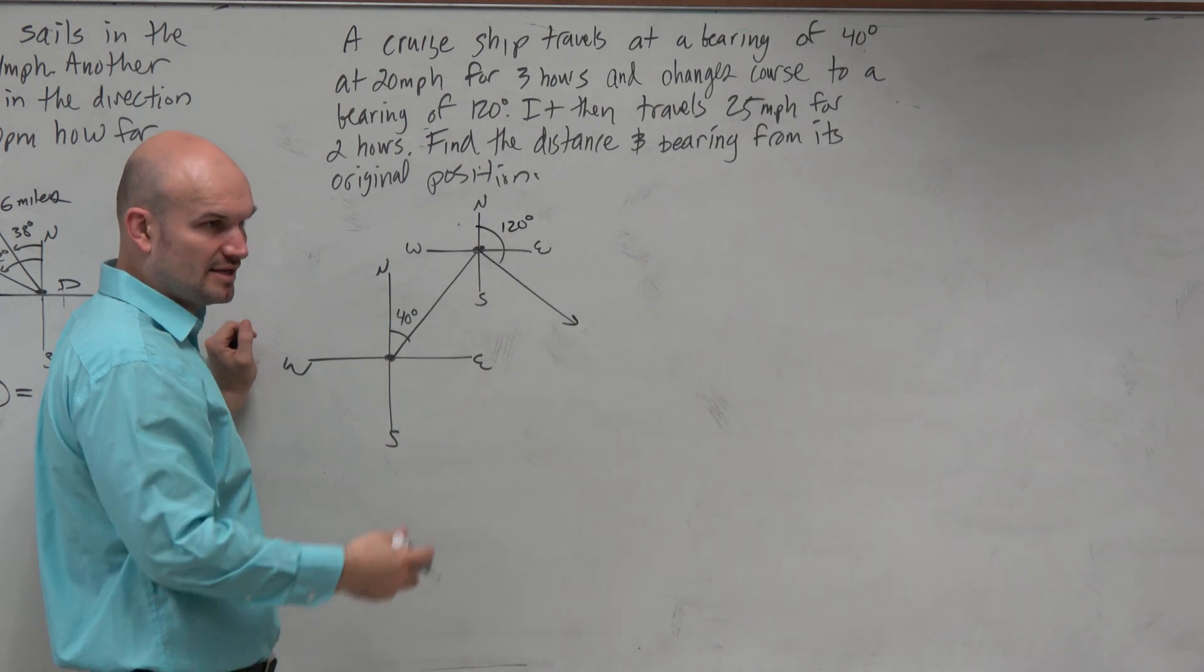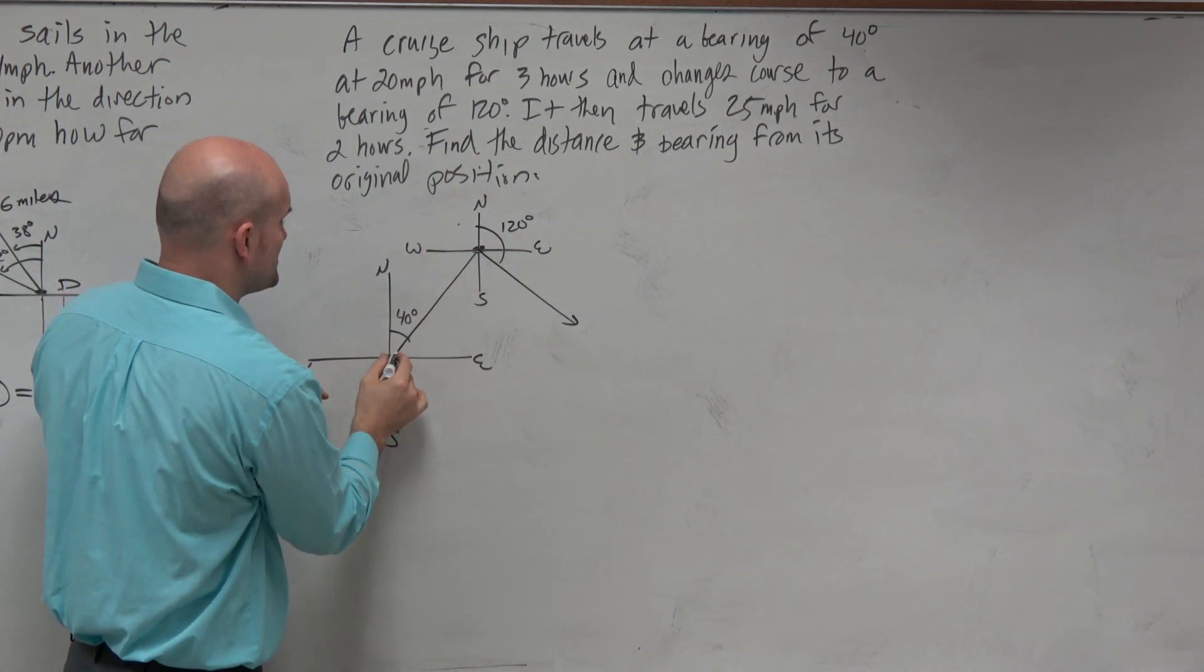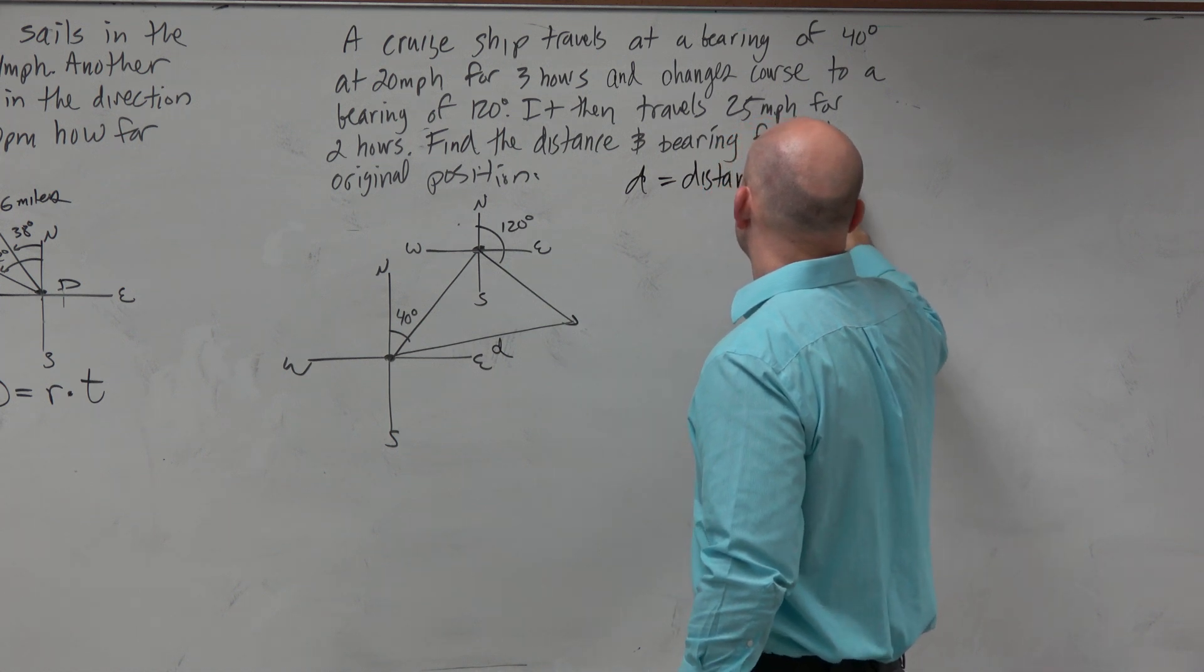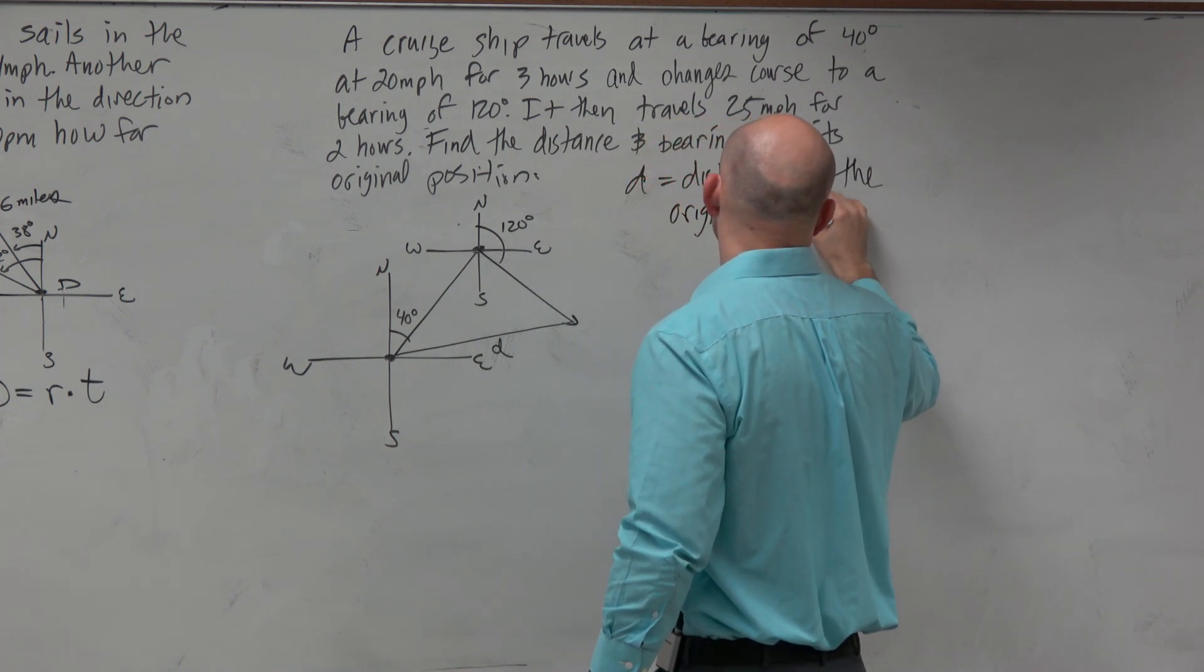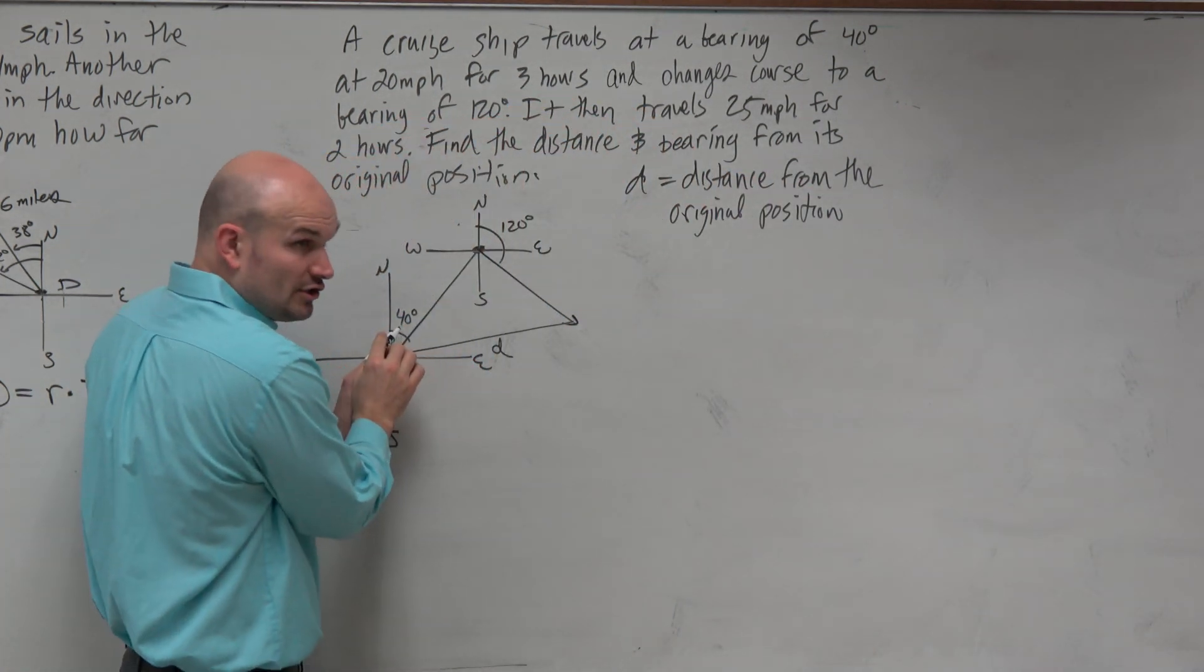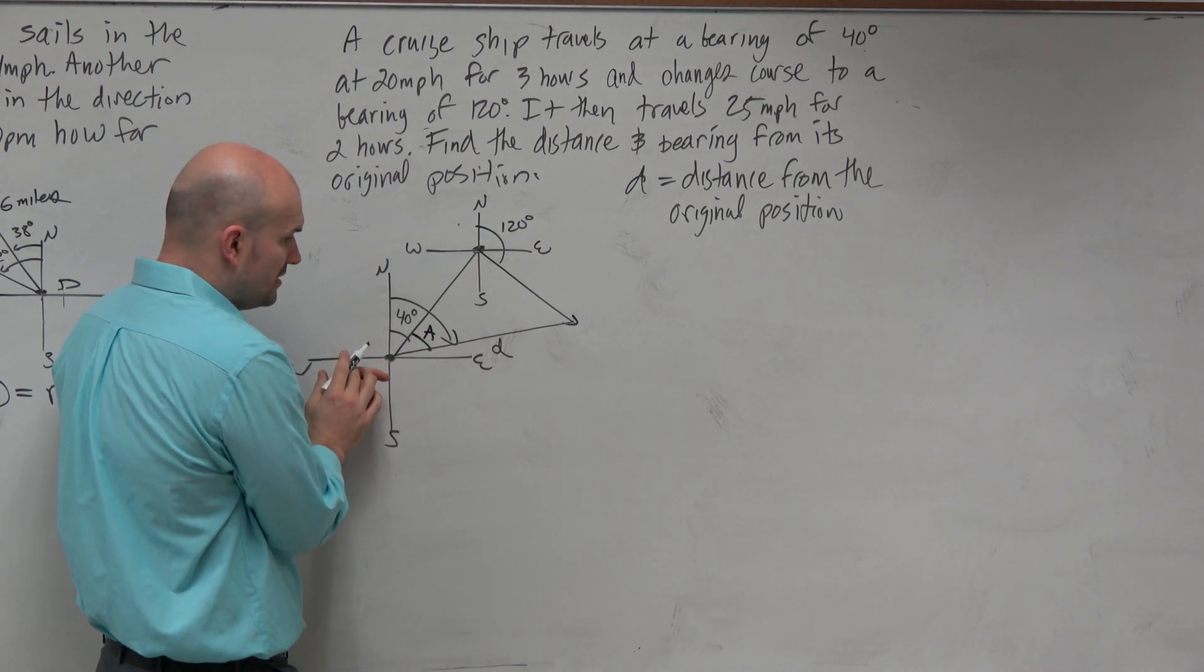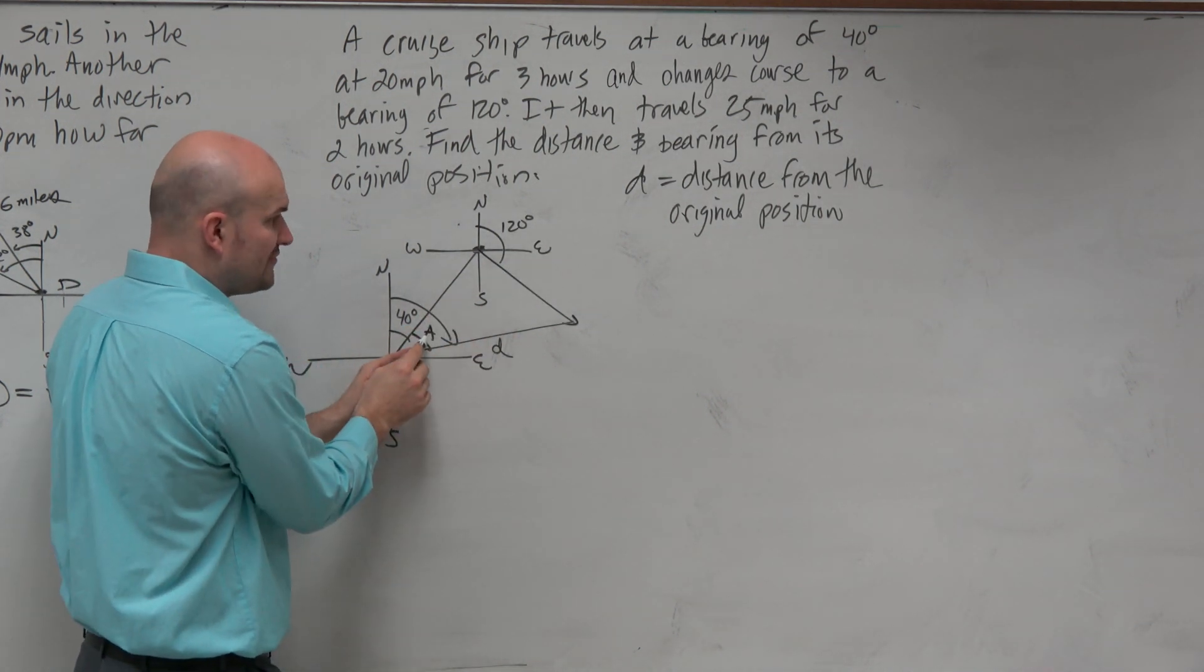Does that make sense to think about the path here? We have 40 degrees and then that's 120. And then they're saying find the distance and the bearing from its original position. So therefore we need to figure out D, which is the distance from the original position. And then we need to figure out the bearing. Now remember the bearing is from due north. So it's not 40 degrees. It's going to be from here to here, so it's really going to be this angle. Let's call this A. It's really going to be A plus 40. So we've got to figure out A. So we have two things we need to figure out. We need to figure out the length and we need to figure out the angle.